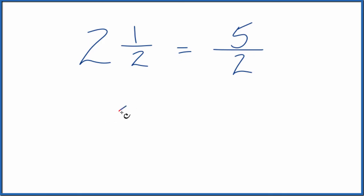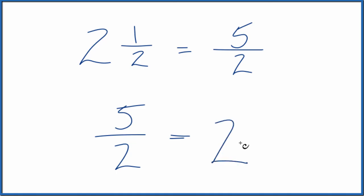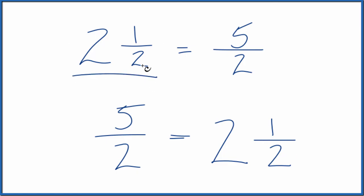And we can check that. We can take 5 over 2. So 2 goes into 5 twice — that's our whole number — with 1 left over. Then we bring the 2 across: 2 and 1 half. Same thing that we started with.